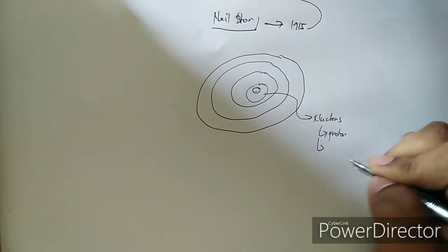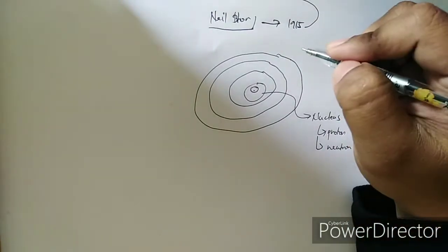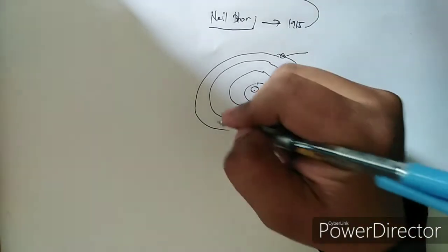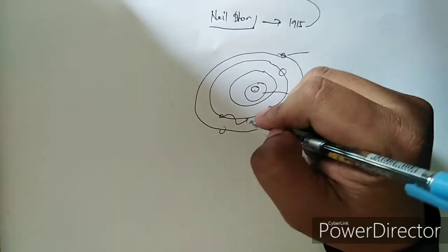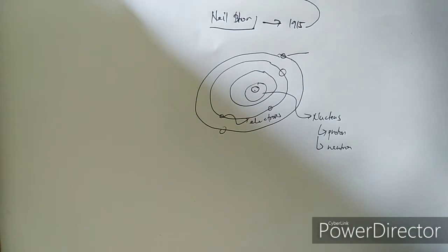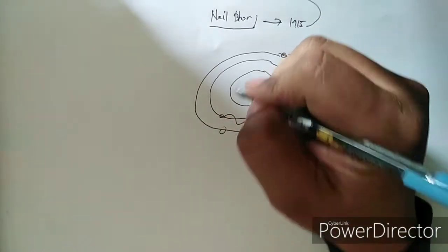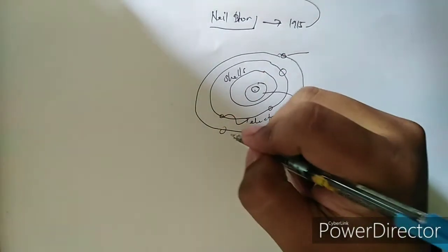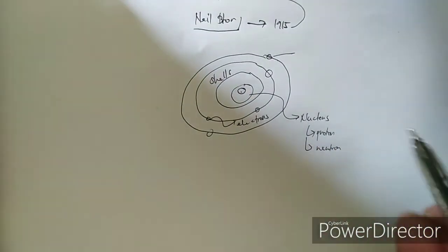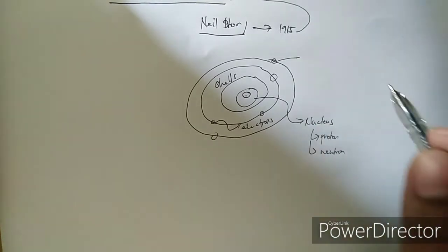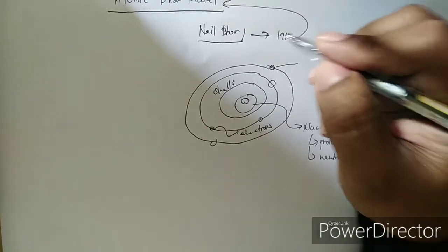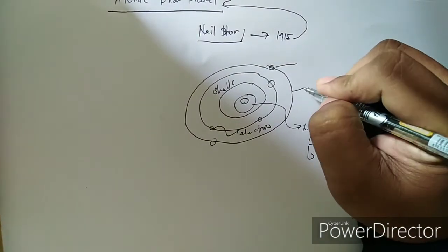The particles that orbit the center of the atom are called electrons. These rings around the nucleus are called shells, and the electrons orbit these shells. This is the model of the Atomic Bohr Model — it is very simple, but if you go beyond this model it becomes very complicated.